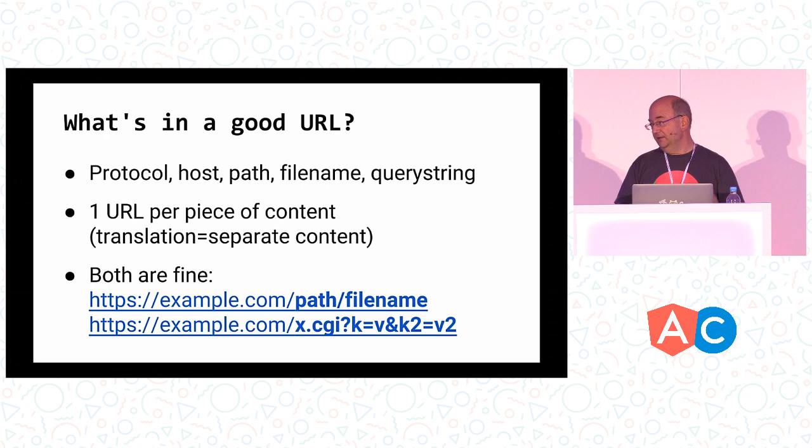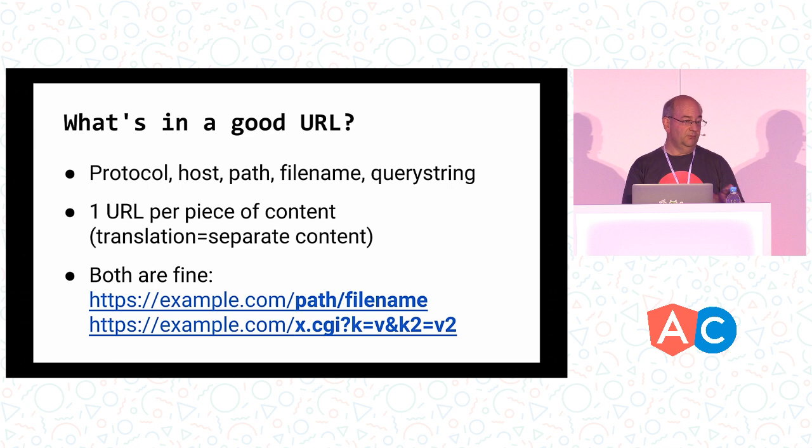We essentially look at the path and the file name — parameters are fine if you have them. It's important that you have one URL per piece of content. If you have multiple states within your app or website, all of those states need individual URLs. If you have translated content — in English, German, and French — all of that needs separate URLs as well.